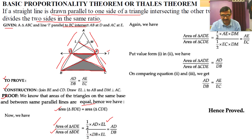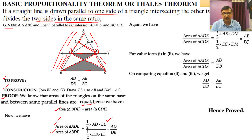Area of triangle ADE = ½ × AD × EL, and area of triangle BDE = ½ × BD × EL. Some students get confused — BD is the base, and EL is the perpendicular because this line continues passing through L. So EL is perpendicular to both AD and DB. EL and ½ cancel out, giving us AD/DB.